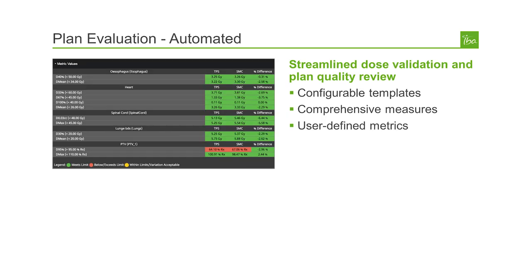Once the plan evaluation is complete, the user can access a number of plan evaluation tools. One is a comparison of the treatment plan dose, the Symoca secondary dose, and the difference between the two doses. All the plan metrics required to compare these two plans can be configured in case-specific or plan-specific scripting.